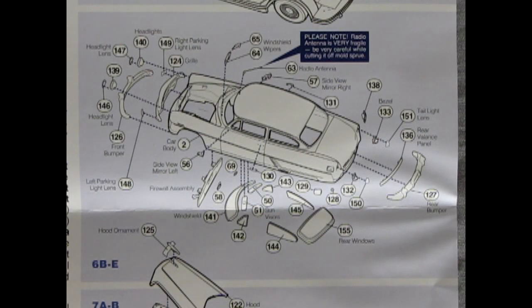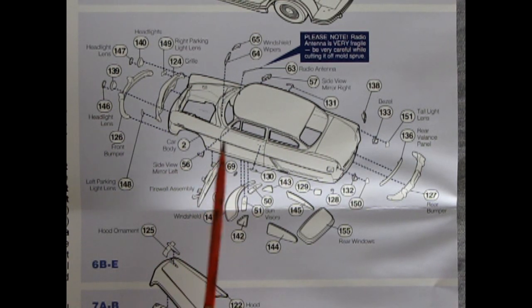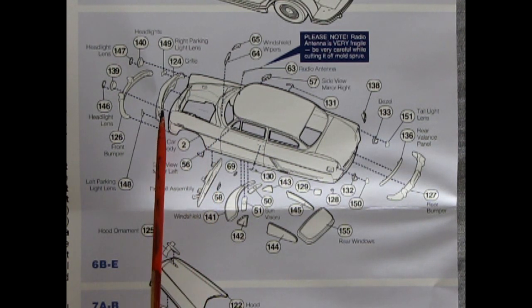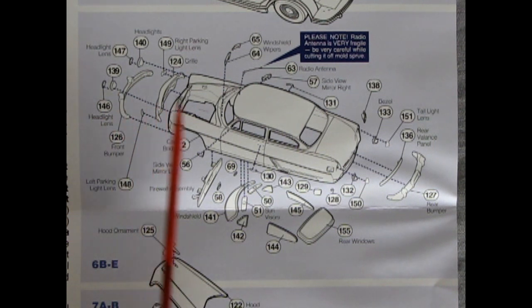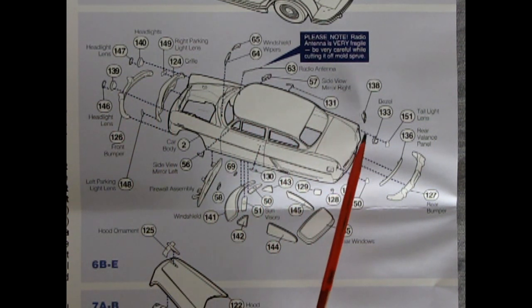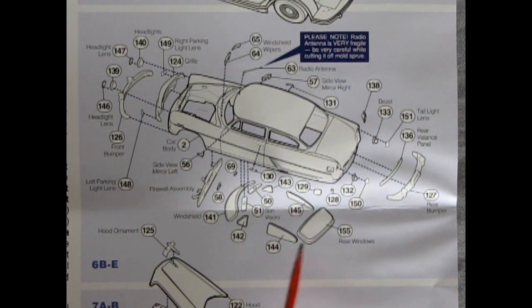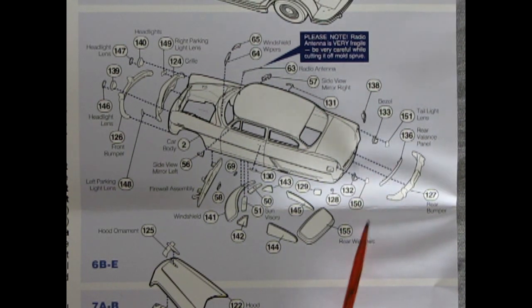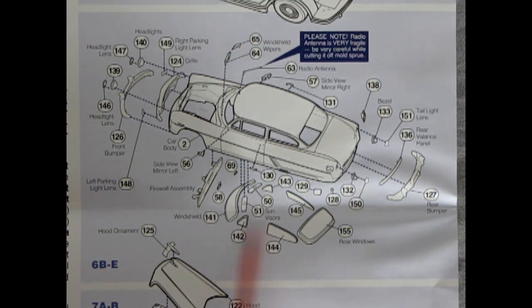Then we continue on with our body by putting in the firewall underneath as well as our chrome grille and bumper headlights and all the little door handles and mirrors and tail lamps and everything else that make up this kit including the rear bumper and the molding on the back. And then we have our windows and our sun visors going in as well.